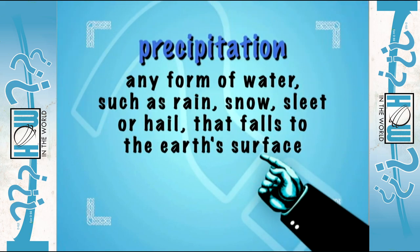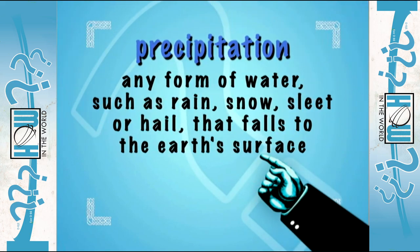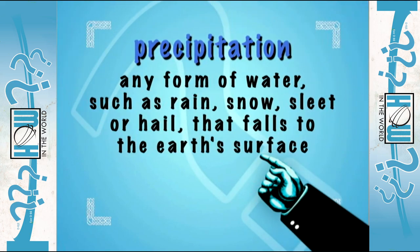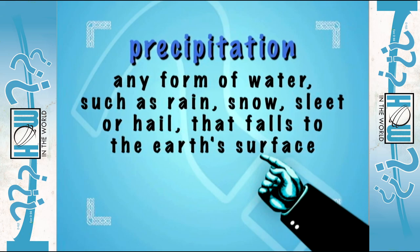Remember, precipitation is any form of water — such as rain, snow, sleet, or hail — that falls to the earth's surface.